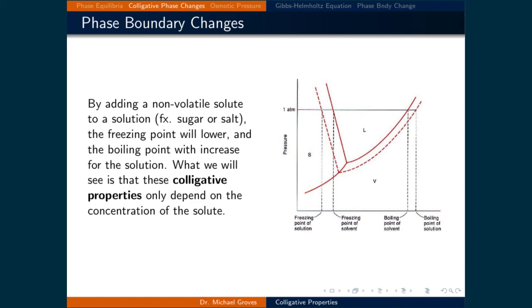The second topic in this lecture is what happens to the freezing point and boiling point of a solvent when a non-volatile solute is added to make a solution. We know that mixtures have lower chemical potentials than pure substances, and this shifts the phase boundaries to lower pressures as illustrated in the phase diagram on the right.